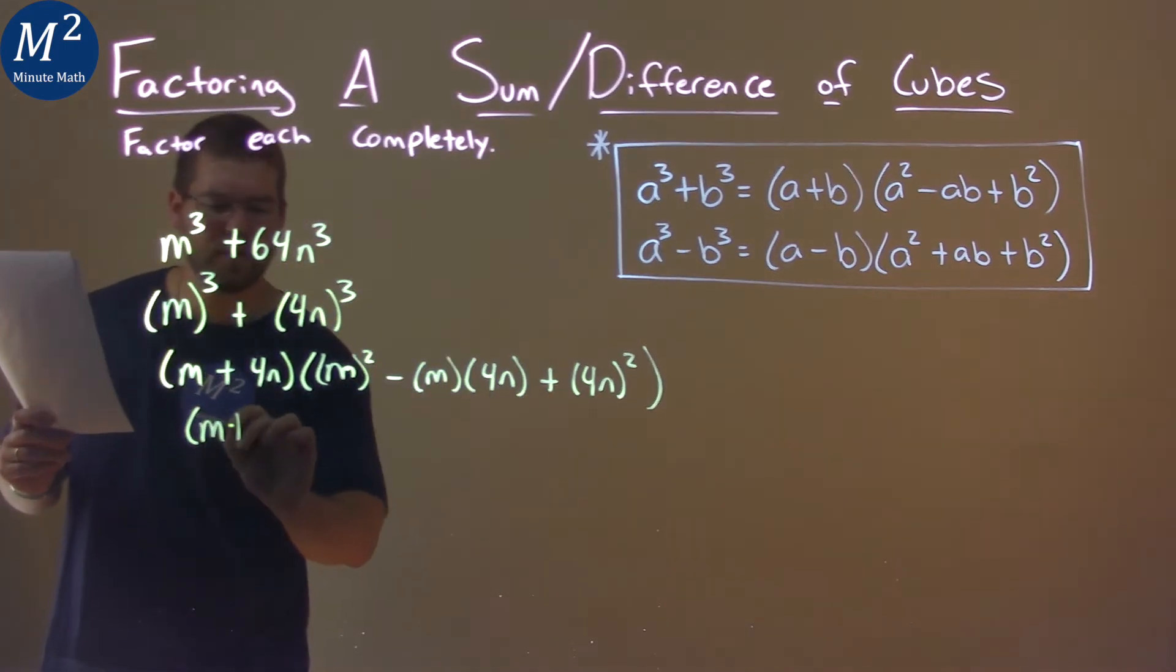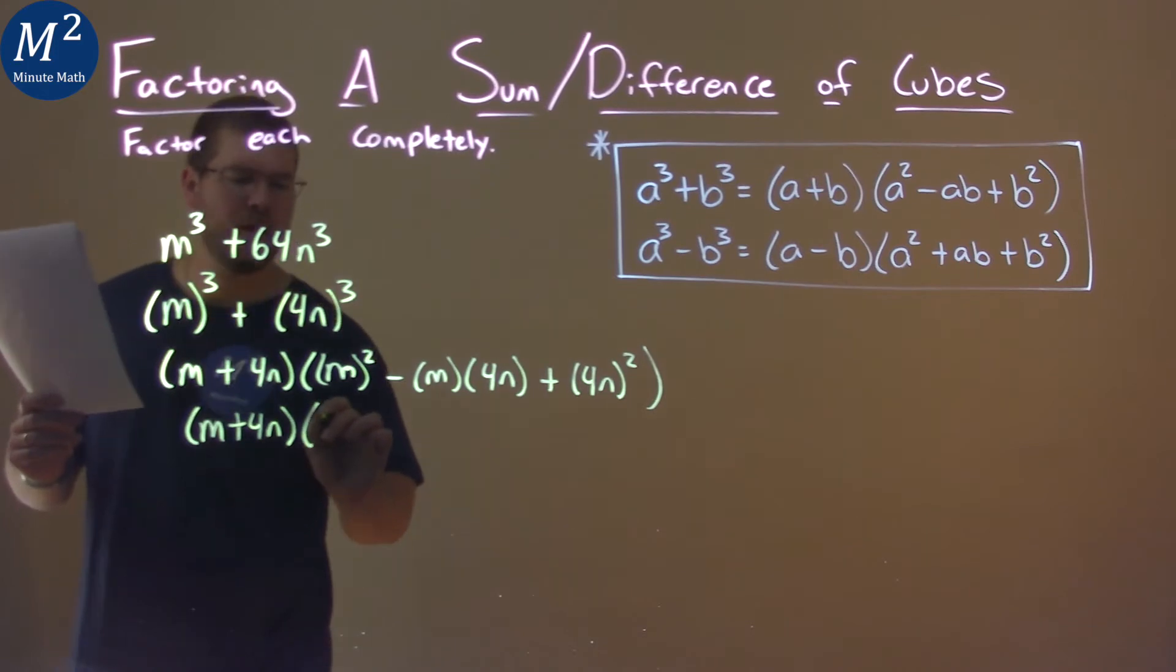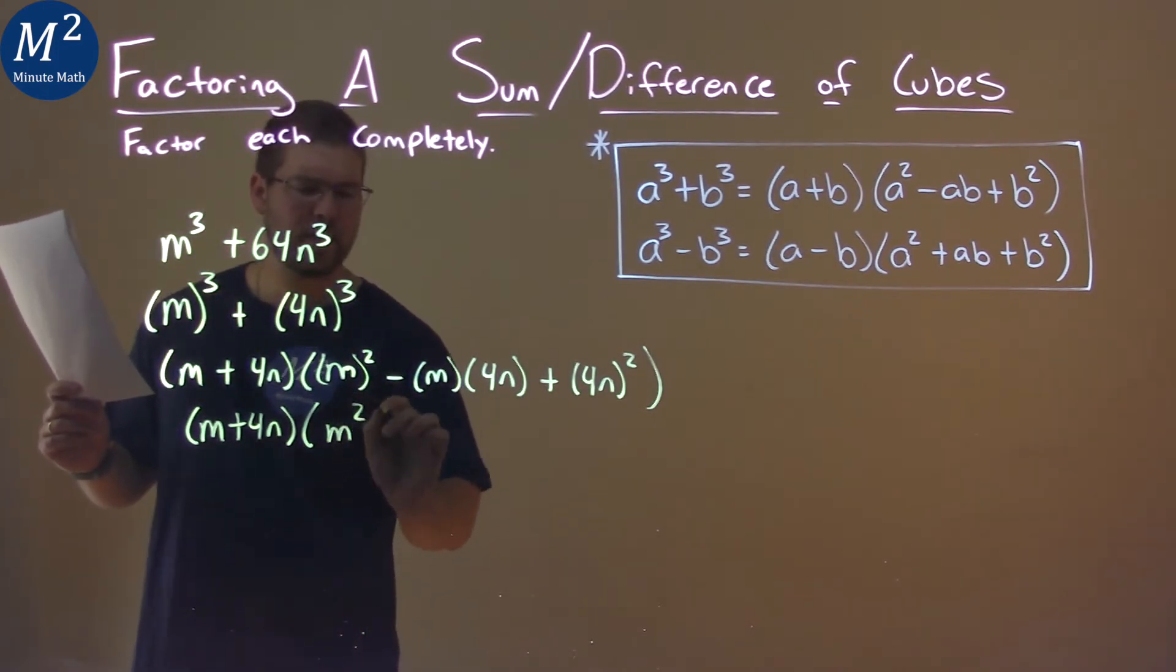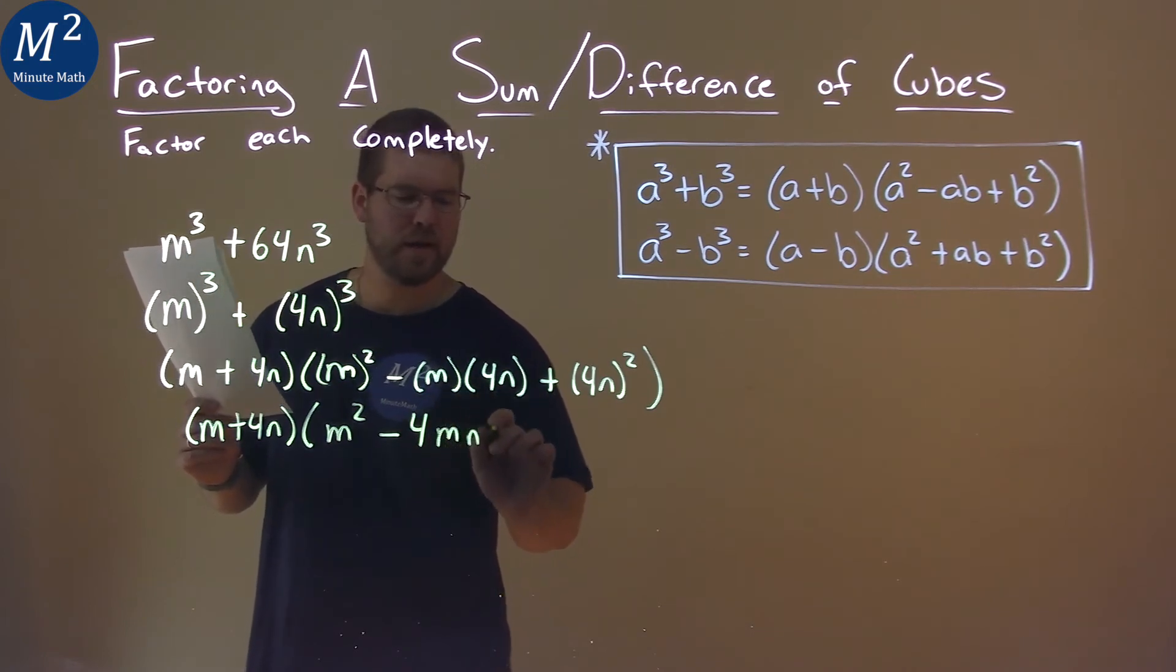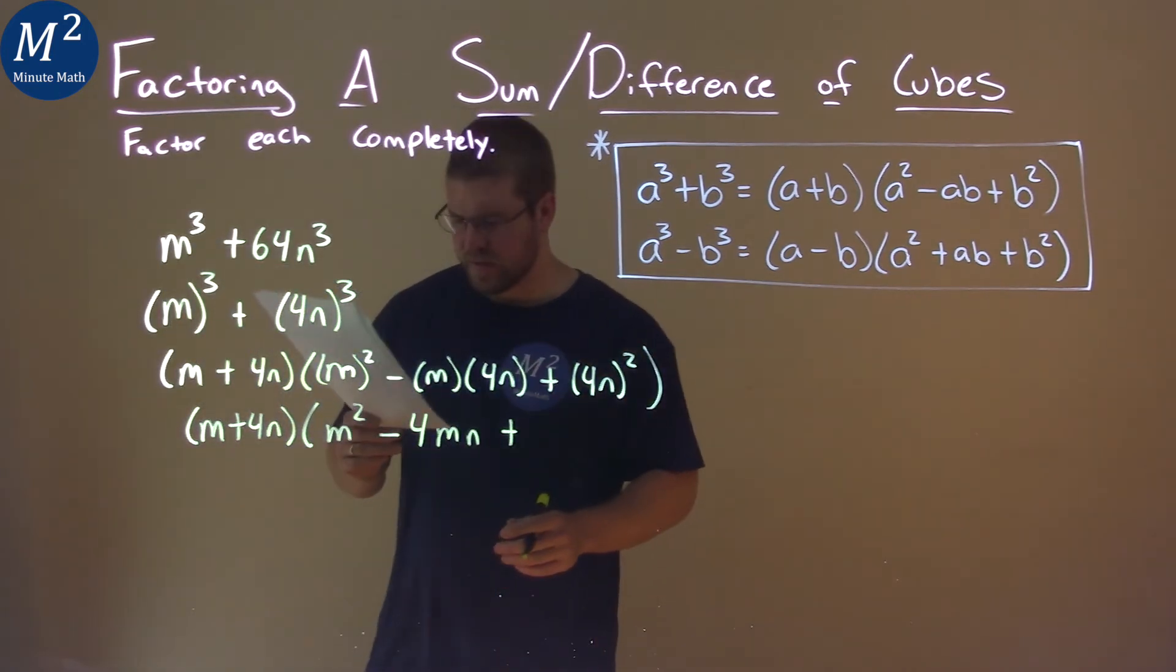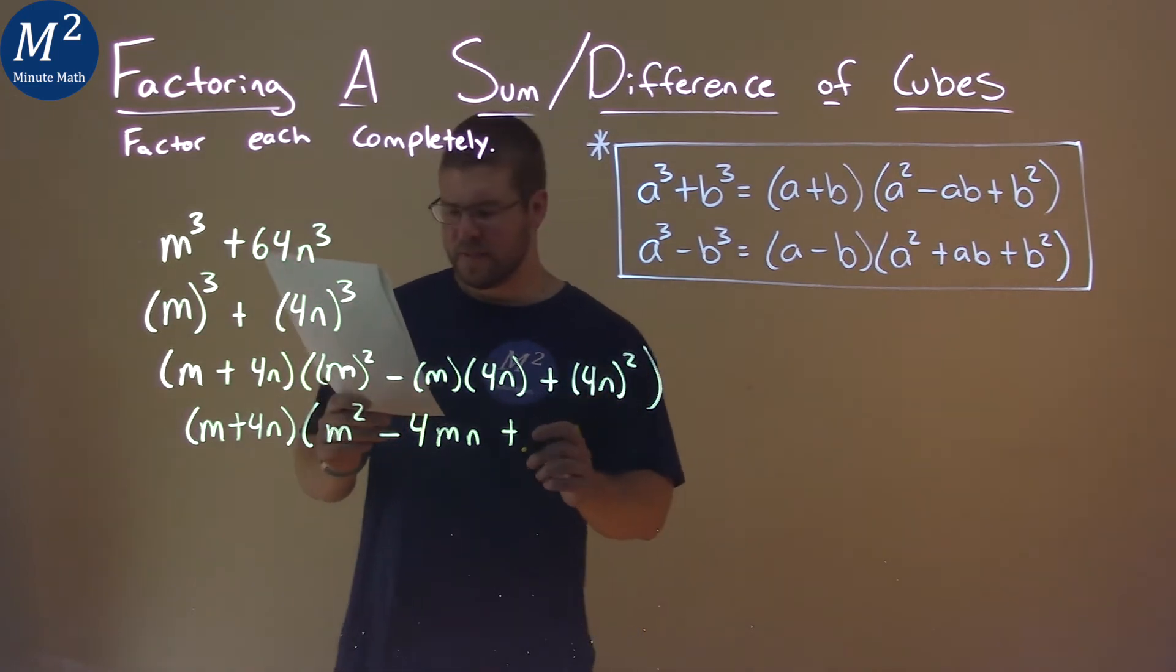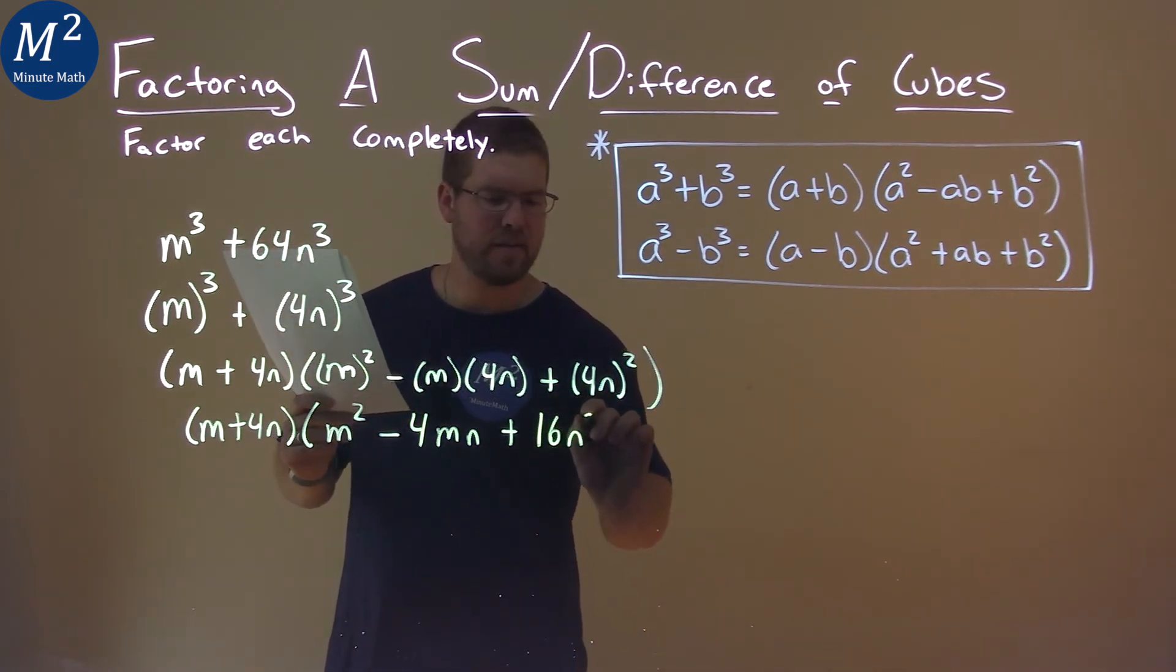The m plus 4n just comes down. m squared, just write it like this, minus, we'll put the 4 first, m times n, make it nice. Lastly, 4n all squared is 16n squared.